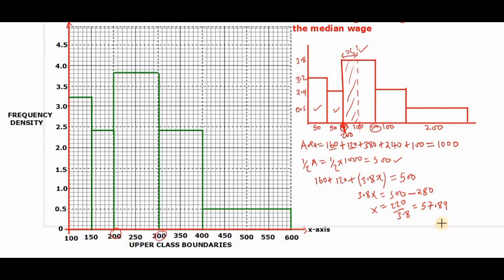So if that is the case, then it simply means that the median will lie at, so at this particular point we have 200 plus x, so we'll have the median being at 200 plus x and x is 57.89.